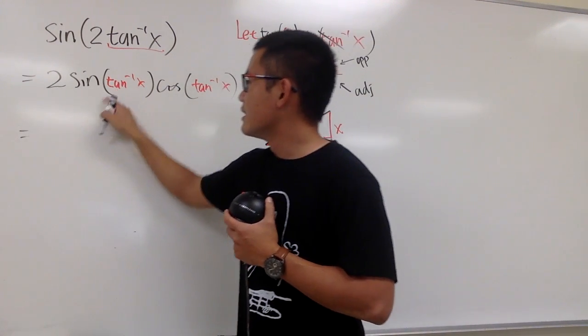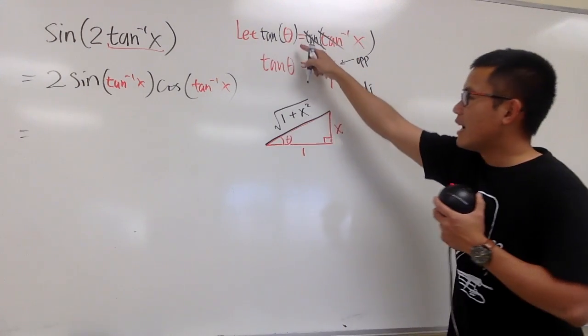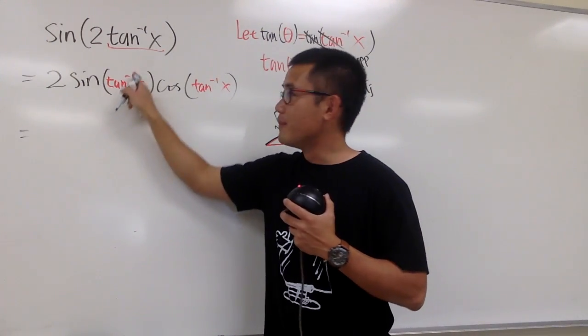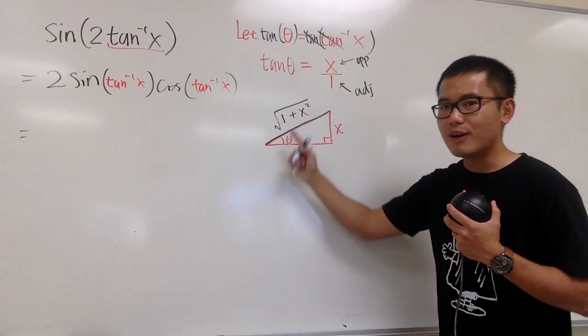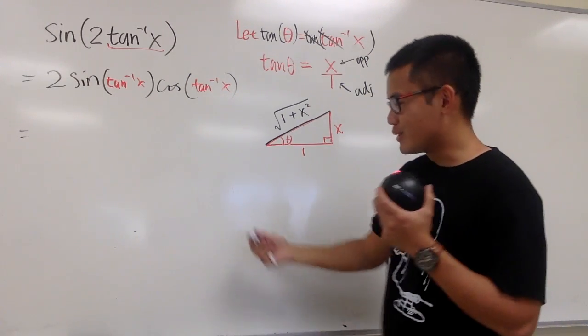Once again, you see, this right here is our theta, and now we are talking about sin(θ). We can just figure it out from this right triangle.